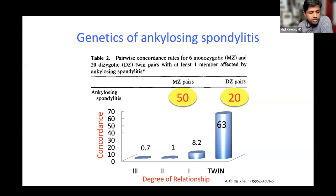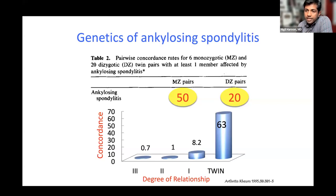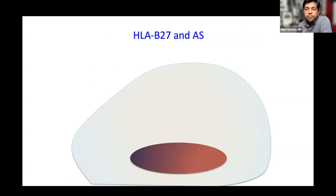If a parent is B27-positive and the child is also B27-positive, the risk increases to only 20%. So essentially 8 to 9 out of 10 times, the kids will not develop AS — something that is comforting and good to know.